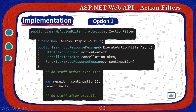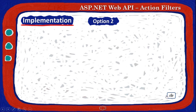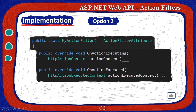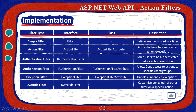Option 2 requires extending ActionFilterAttribute, then using OnActionExecuting for logic before the action method and OnActionExecuted for logic after. We implemented the interface iActionFilter and used the class ActionFilterAttribute, just as shown in the filter types table.